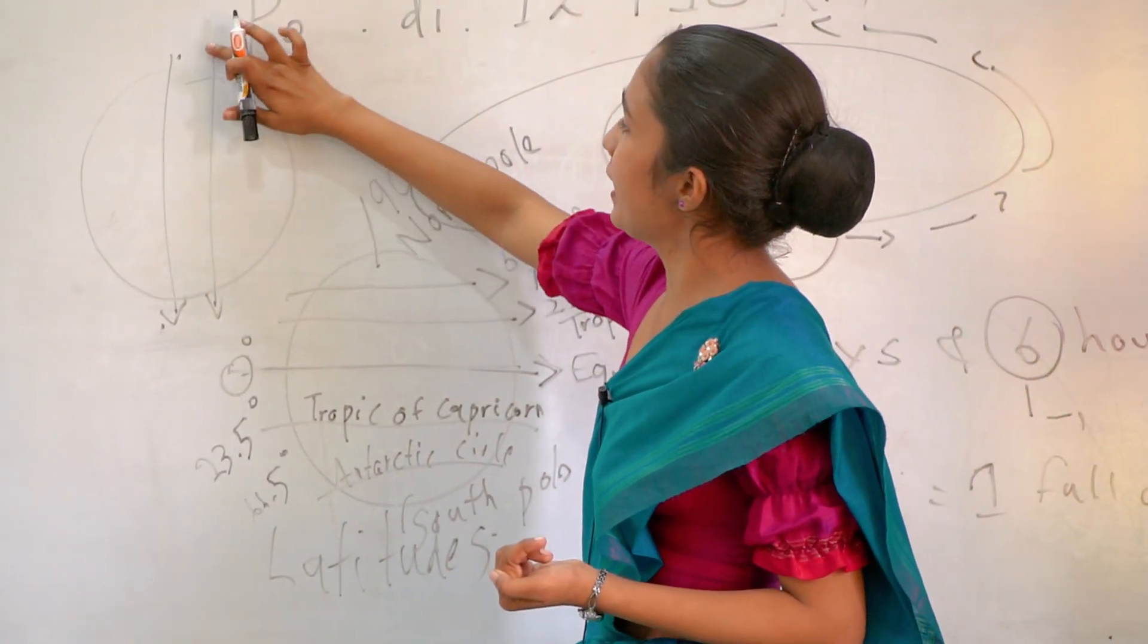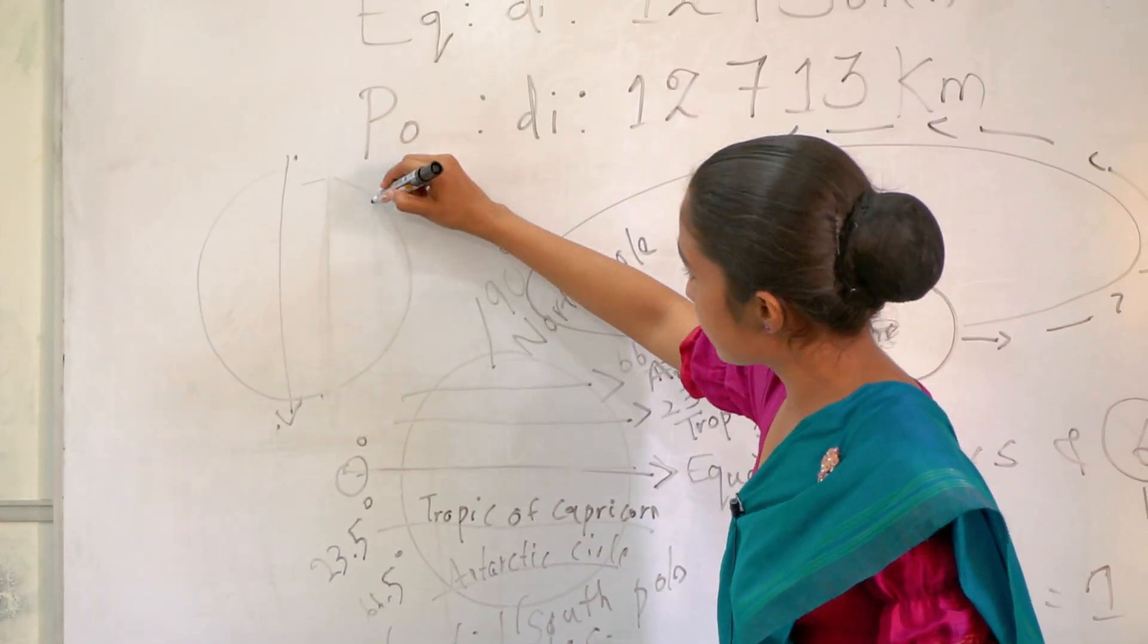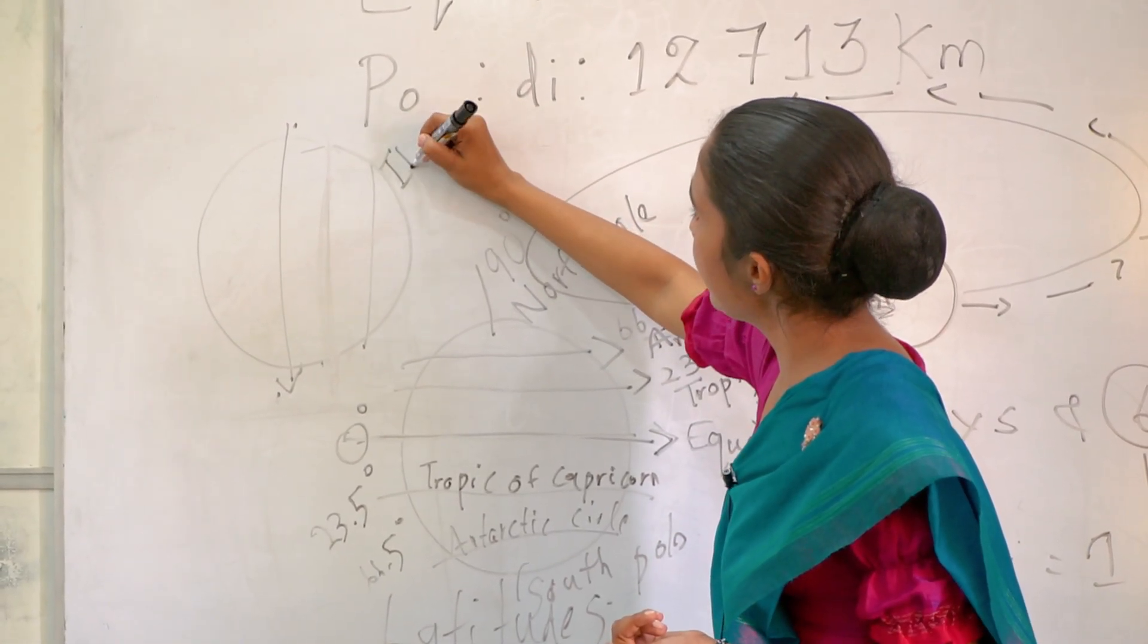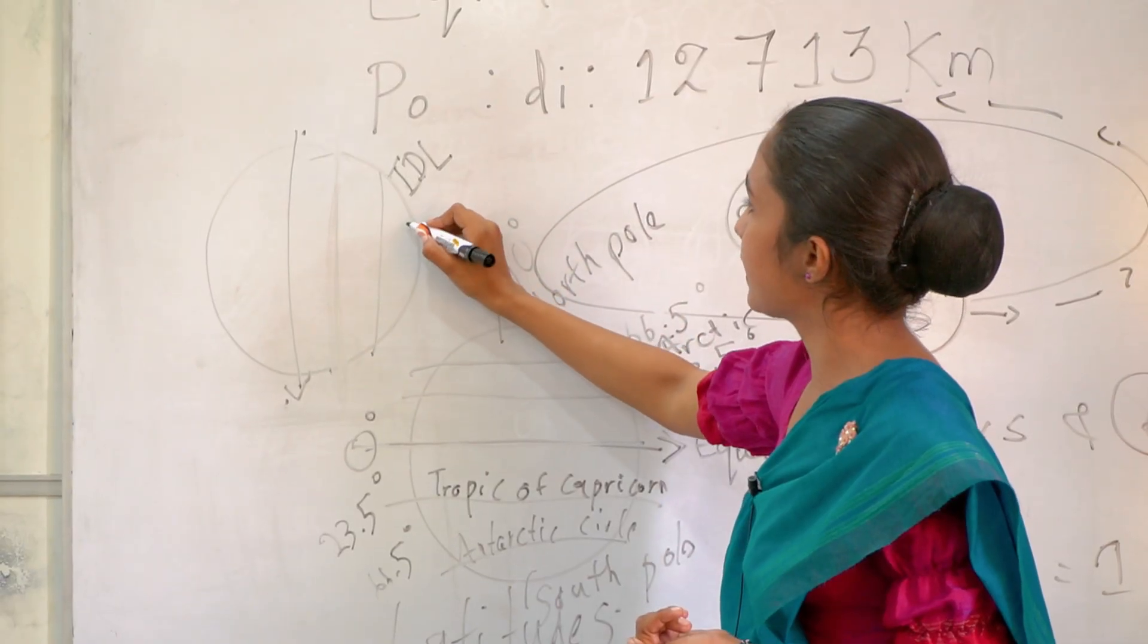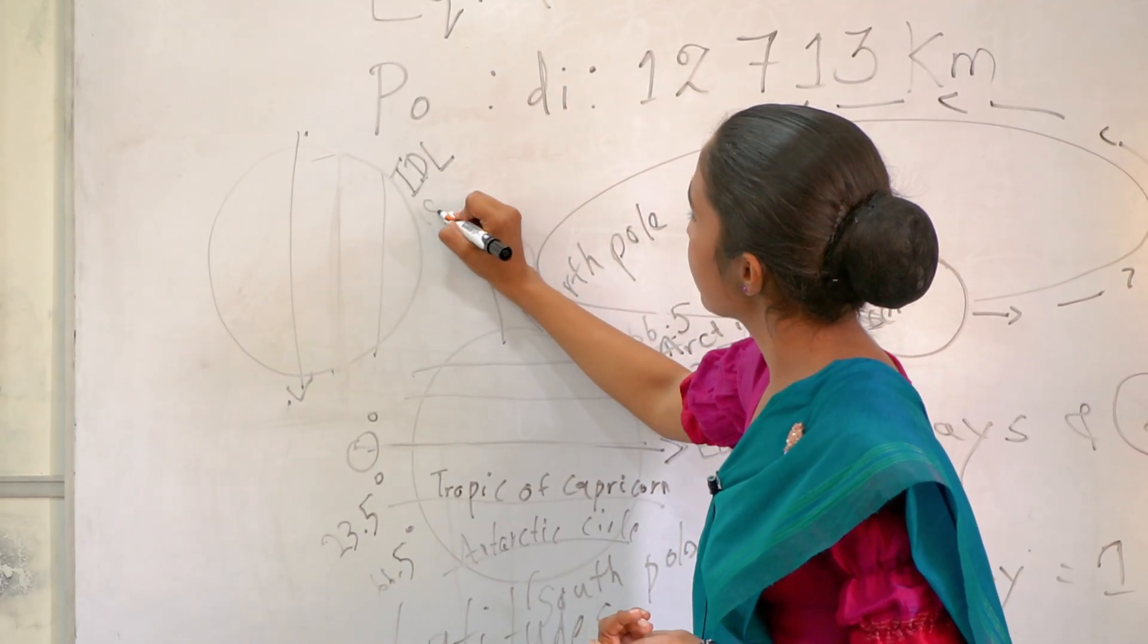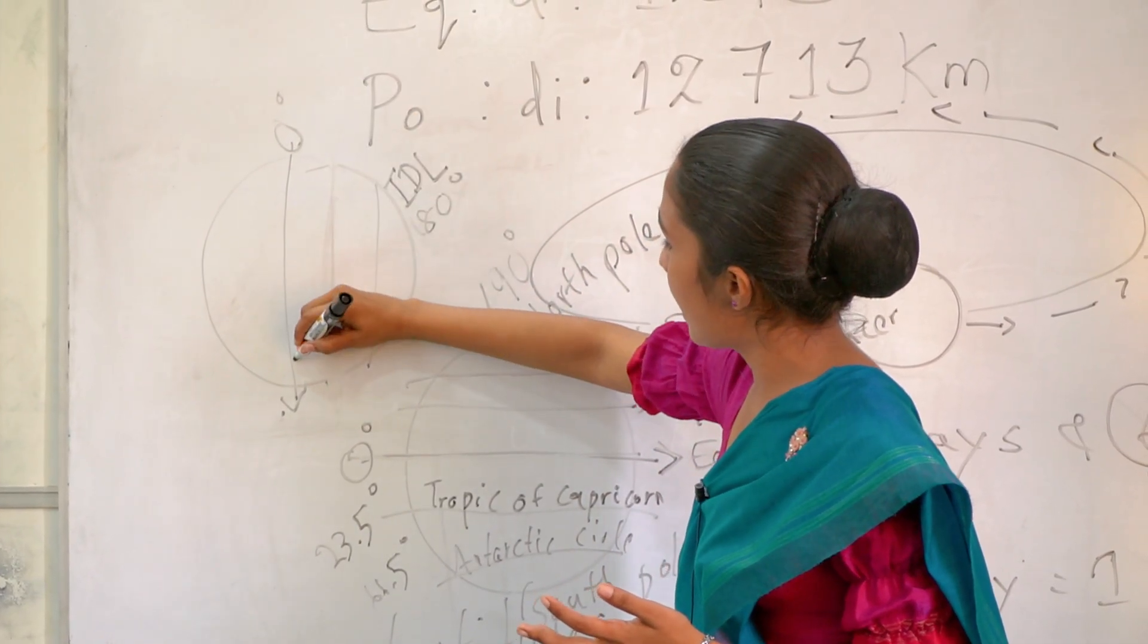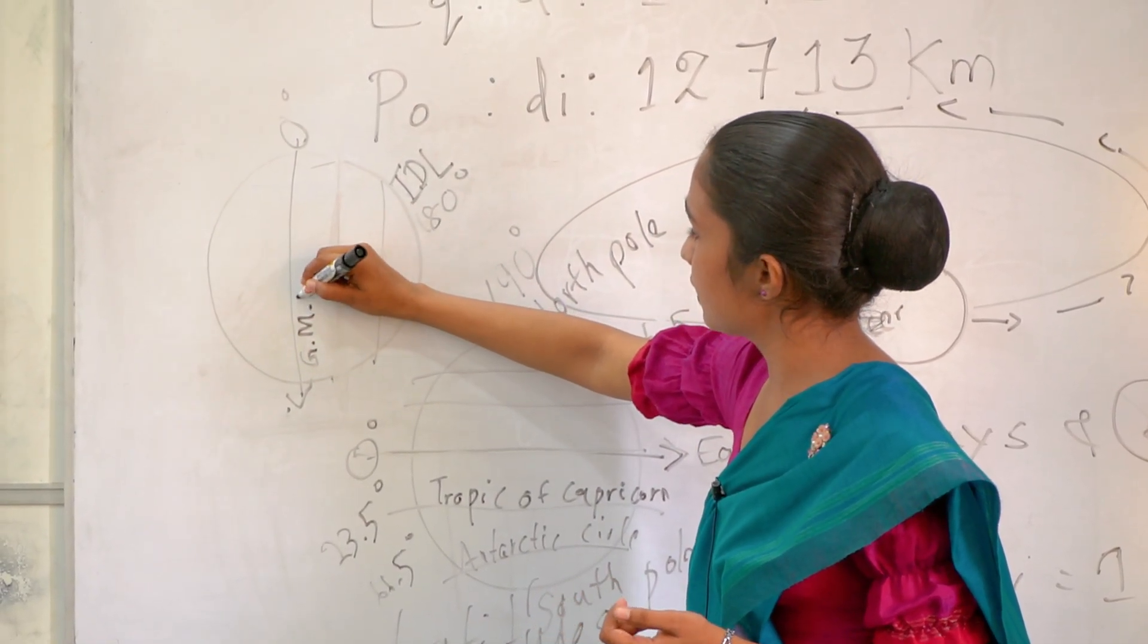We have two main latitudes. Not latitudes, longitudes also. This one is IDL line, International date line. This is 180 degrees. And this one is zero longitude. We have Greenwich Meridian line.